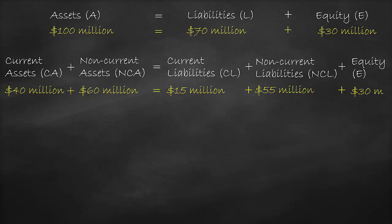Based on this formula, we can see that we have five variables: current assets, non-current assets, current liabilities, non-current liabilities, and equity. This is useful to keep in mind, as any finance or accounting related question may have four known variables and one unknown variable, meaning that this formula can assist in solving for the unknown.